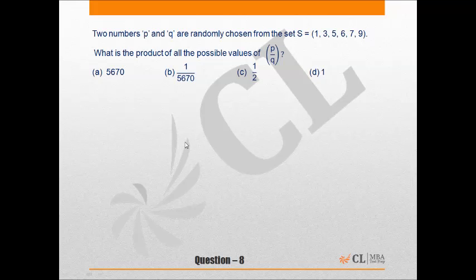Now let me choose any two random numbers from the set S, say 1 and 3. So the possible values of P/Q are 1/3 and 3/1, and their product is equal to 1.